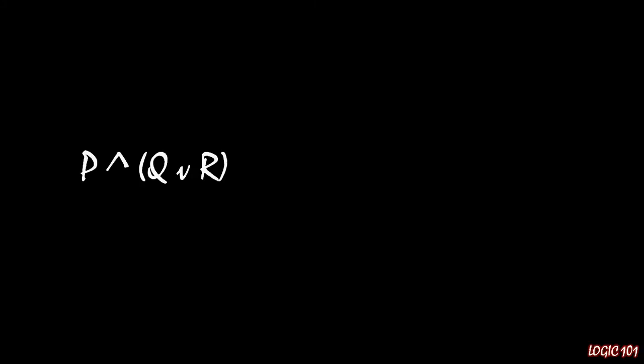If we combine those two pieces of information together, that means that P and Q could be true, P and R could be true, or P, Q, and R, all three of them could be true.